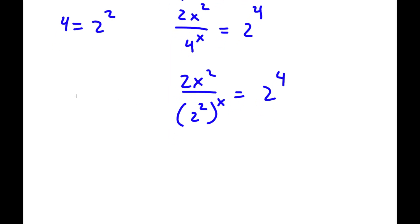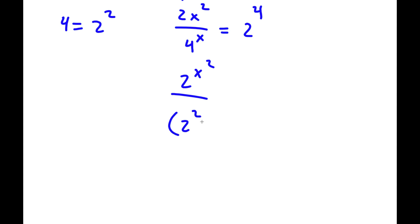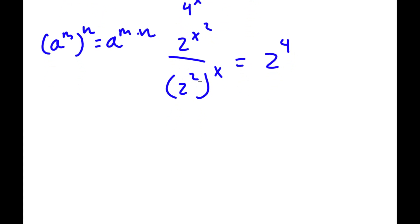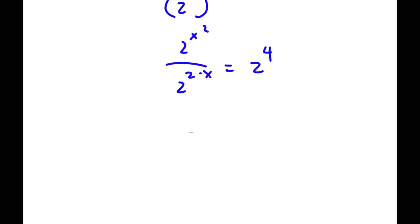Now if I have something in the form a to the power of m to the power of n, this is equal to a to the power of m times n. So 2 squared to the power of x equals 2 to the power of 2 times x, which is 2 to the power of 2x. So now I have 2 to the power of x squared over 2 to the power of 2x is equal to 2 to the power of 4. And as you can see, all my bases here are 2, which makes it much easier to solve.